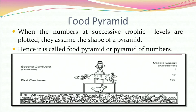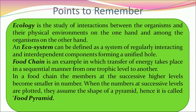When the numbers at successive trophic levels are plotted, they assume the shape of a pyramid — hence it is called a food pyramid or pyramid of numbers. To recap: ecology is the study of interactions between organisms and their environment. An ecosystem is a system of regularly interacting and interdependent components forming a unified whole. In a food chain, members at successively higher levels become smaller in number, forming the shape of a pyramid.